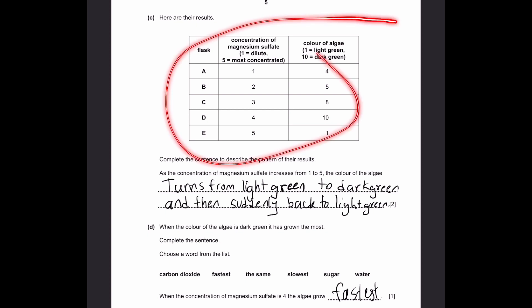Part C. Here are the results. There's a table containing the flasks A, B, C, D, E, the concentration of magnesium sulfate where one is dilute and five is the most concentrated, and the color of the algae where one equals light green and ten equals darkest green.